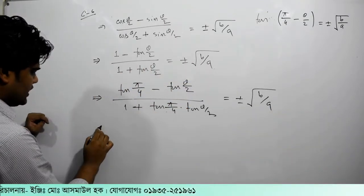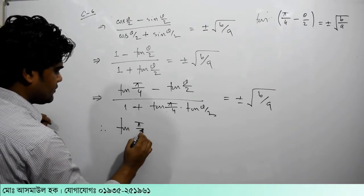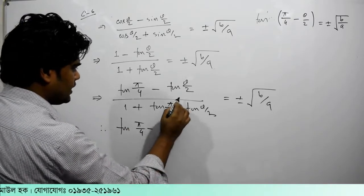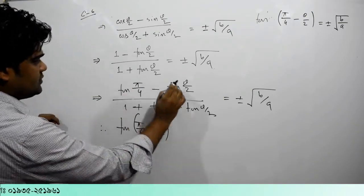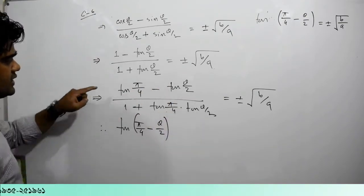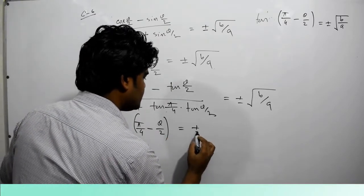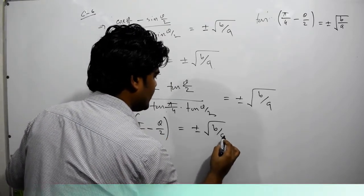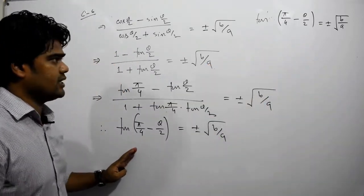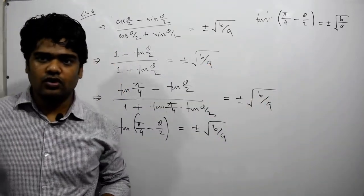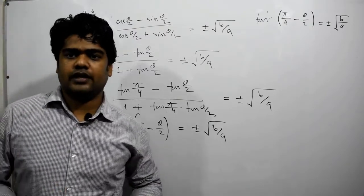Equal to plus minus root over b by a. Let's see, this is the root of tan a, which is π/4 minus tan b, θ/2. This is the root of tan a minus tan b divided by 1 plus tan a · tan b, equal to plus minus root over b by a. This is the left hand side and the right hand side. They have to be very aligned with the root of the right hand side.